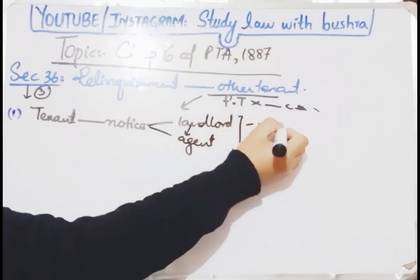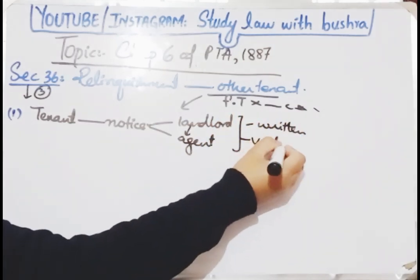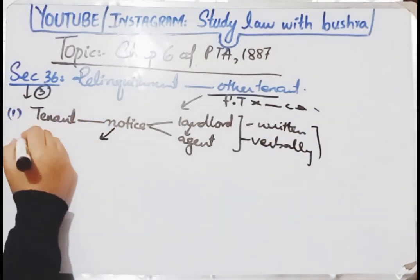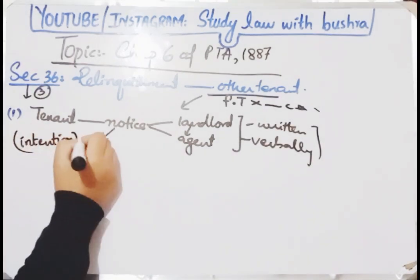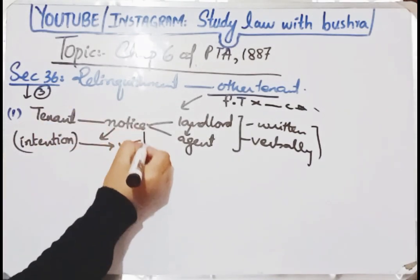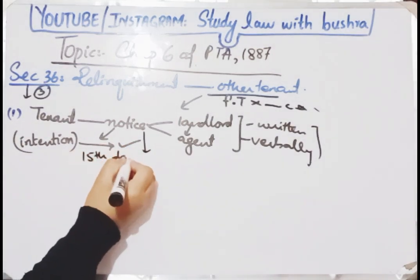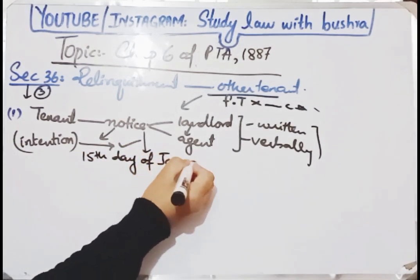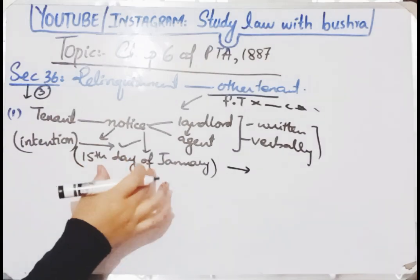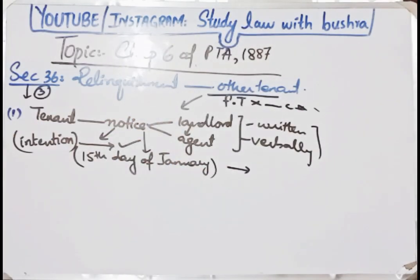Wo notice in writing hoga ya verbally bhi notice bhej sakta hai. Us notice ke andar usne apni intention mention karni hai — ye batana hai ke wo is tenancy ko relinquish karna chahta hai. Ye notice kab dena hai? Jo agricultural year chal raha hai uski 15 January ko tenant ne ye notice bhejna hai landlord ko ya uske agent ko. Simply, jo saal chal raha hai uske khatam hone se pehle — 15 January se pehle — notice dena hai.